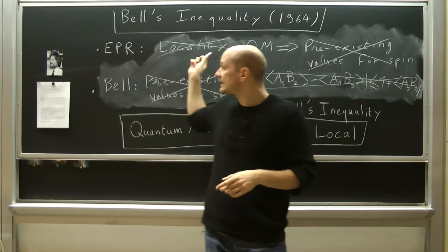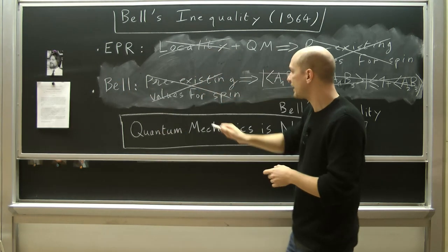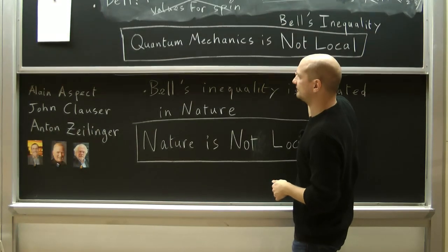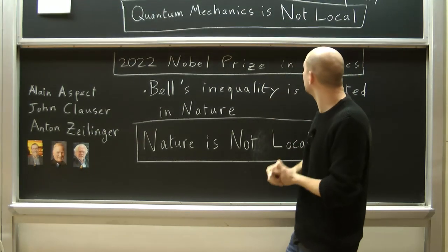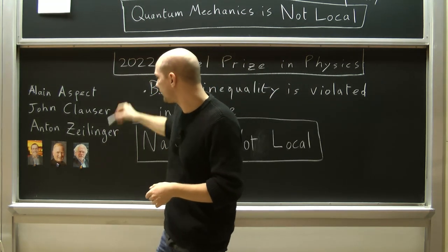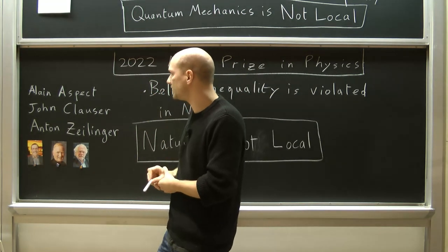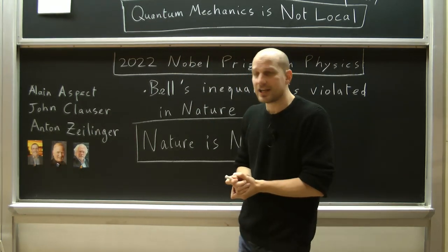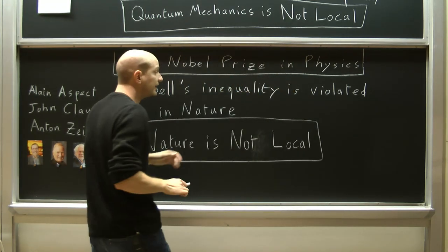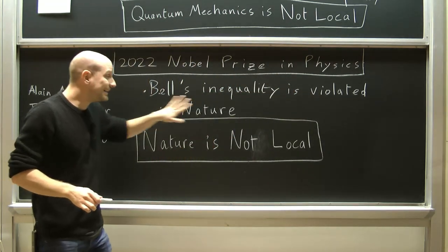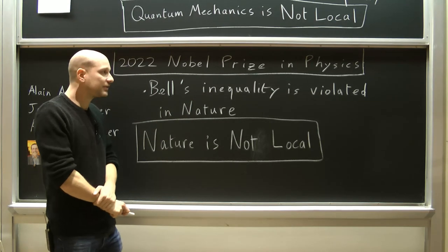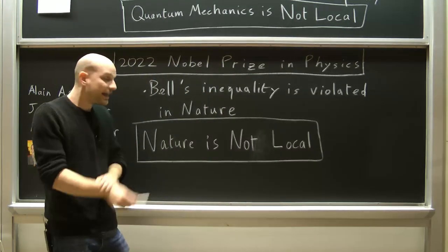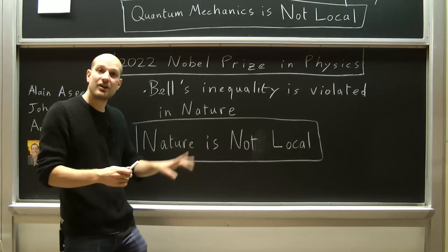So in this 1964 paper, Bell proved that quantum mechanics is necessarily not local. The 2022 Nobel Prize in Physics was awarded to three physicists — Alain Aspect, John Clauser, and Anton Zeilinger — who, along with their collaborators, did experiments showing that Bell's inequality is violated and does not hold in nature. Independently of whether quantum mechanics is a correct theory or not, Bell's inequality does not hold true in nature, and that means that nature itself is not local.